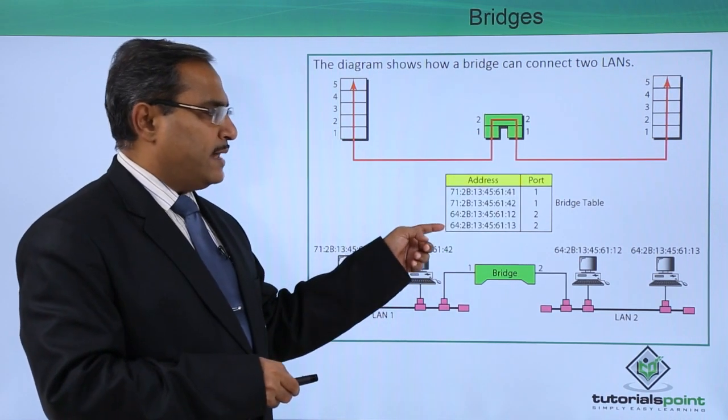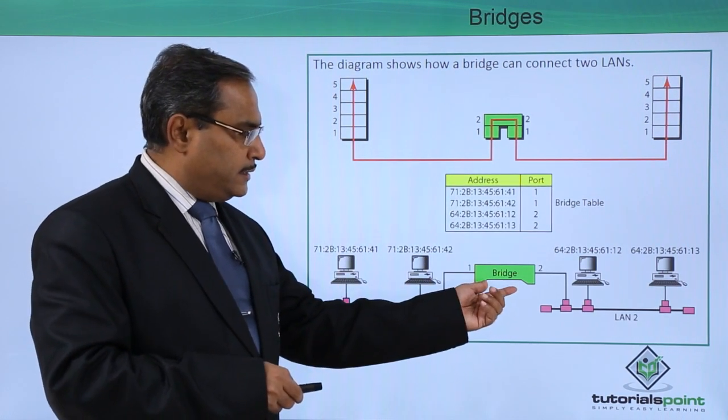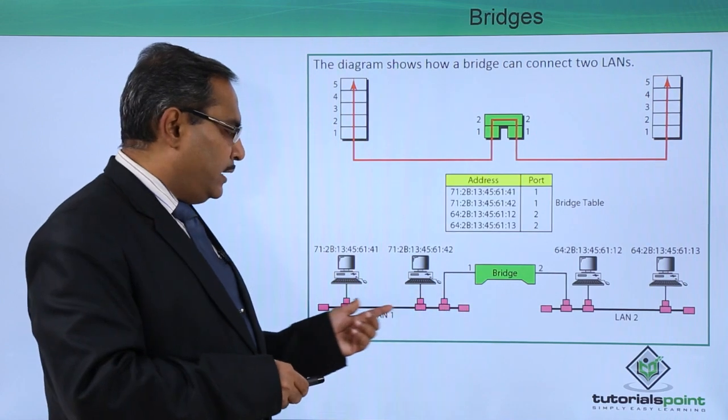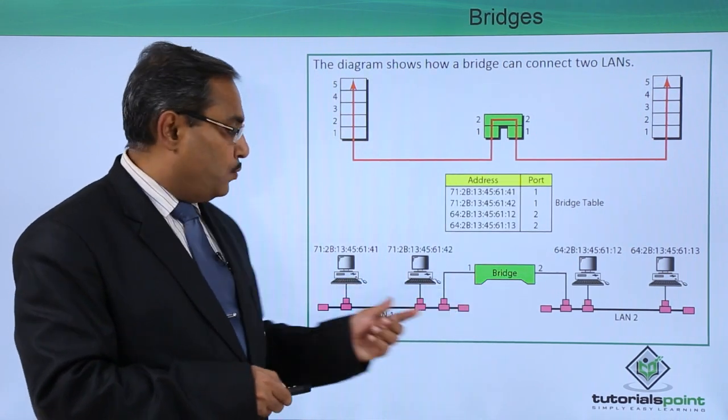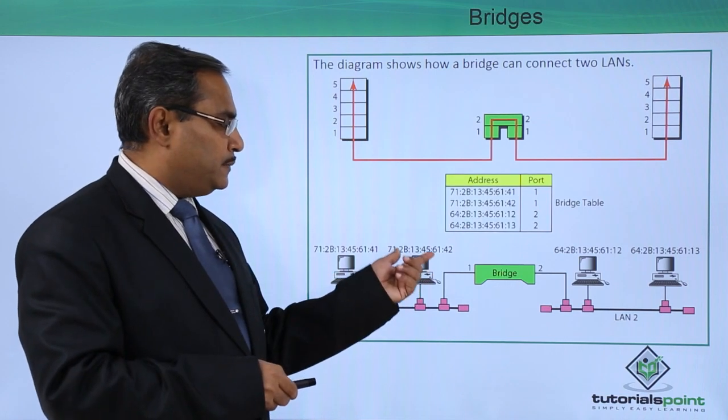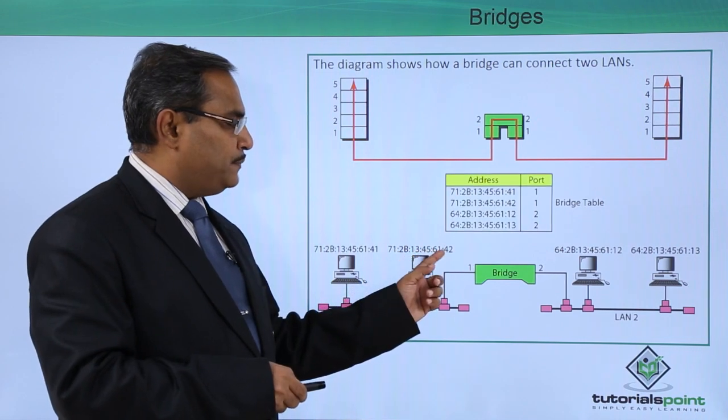Next, there is one sample bridge table. How this bridge table has been formed, you can get this one. This is a bridge and that is one LAN, let it be LAN 1. That is another LAN, let it be LAN 2. Here we are having the respective stations. These are the MAC addresses: 1, 2, 3, 4, 5, 6.